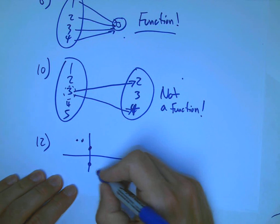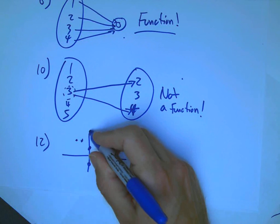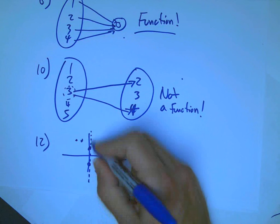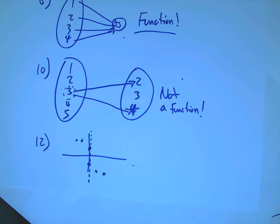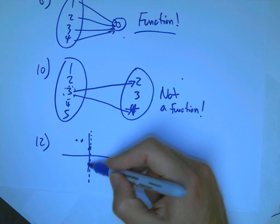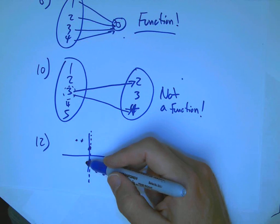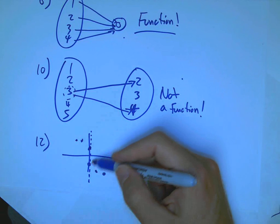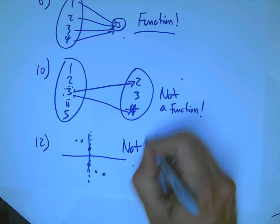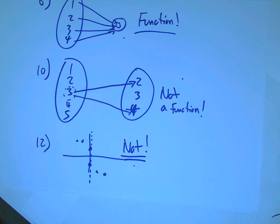Last example, number 12. That's a graph. Looks something like this. And, again, vertical line test. Only this vertical line fails. But, that's enough to make it not a function. There's, the one input 0 has the two outputs. What does it look like? They don't even put a scale on it. But, it looks like minus 2 and 2. Not a function.